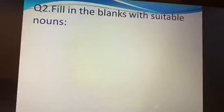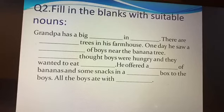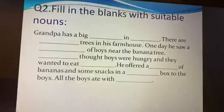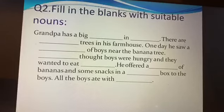Question number two: fill in the blanks with suitable nouns. Grandpa has a big farmhouse in dash — you can name any place here, so I will write India. Grandpa has a big farmhouse in India. There are dash trees in his farmhouse. One day he saw a dash of boys near the banana tree — so it is a banana tree. There are banana trees in his farmhouse. One day he saw a group of boys near the banana tree — so group here is a collective noun.